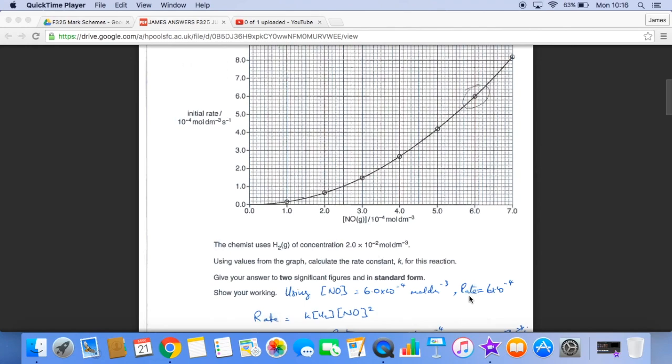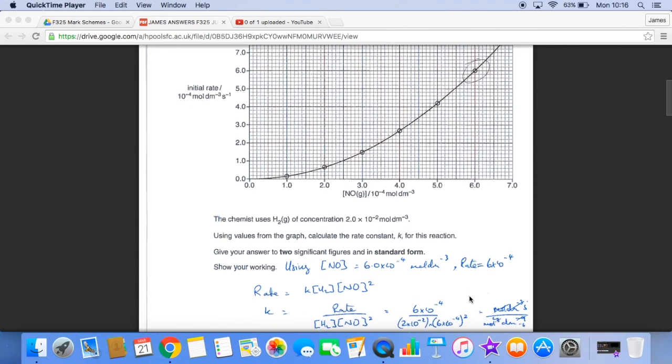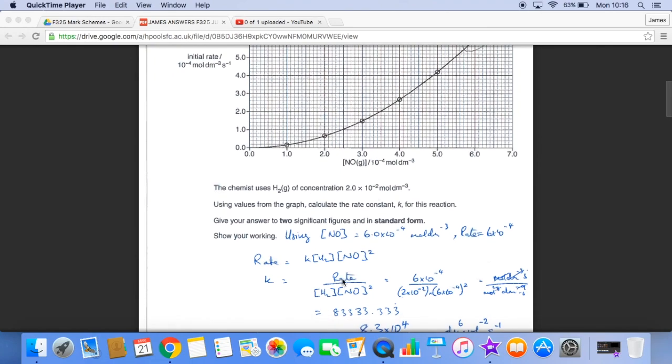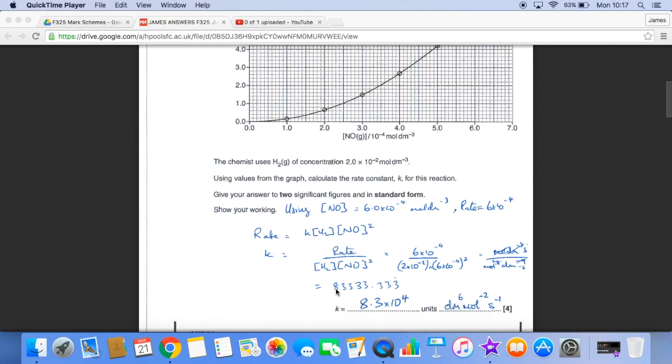The rate is also 6 times 10 to the minus 4. So there's my rate equation, there's my rearranged rate equation for K on its own. The numbers go in, don't forget the square the NO concentration, and you come out with this calculator value which to two significant figures and in standard form is that.